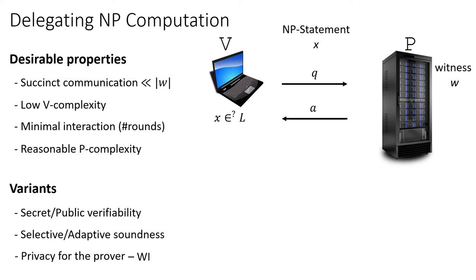One question is whether the verifier needs secret information in order to verify the validity of the answer a. We can think about public verifiability, where everybody who has q and a can run the verification procedure and check whether the verifier would accept. Or we can think about secret verifiability, where the verifier, while generating the query q, also generates a secret key which it keeps secret from the prover, and uses it to verify the answer a. In many protocols in the standard model, you actually need this secret verifiability.